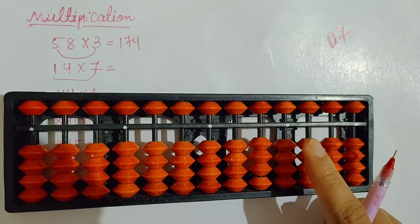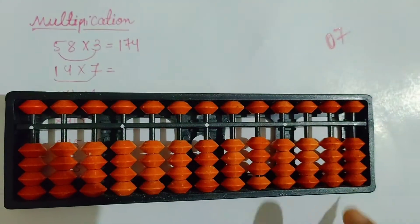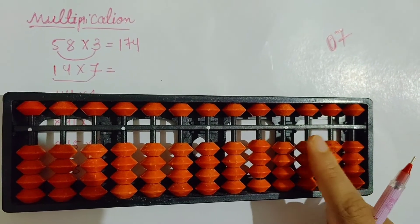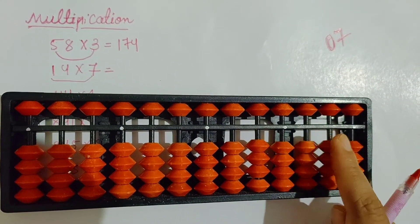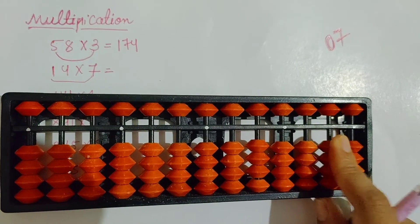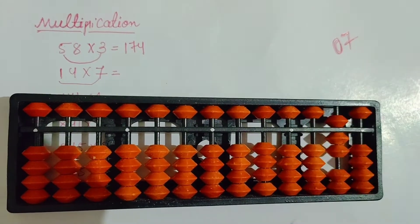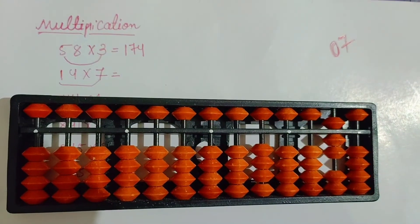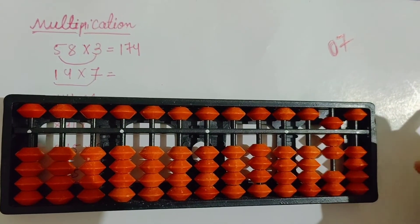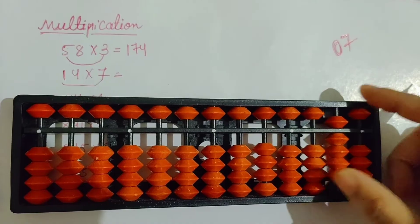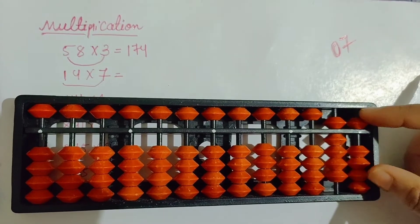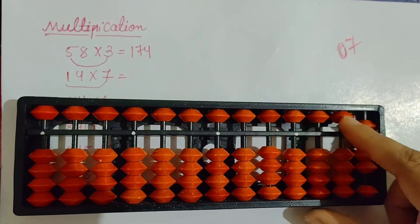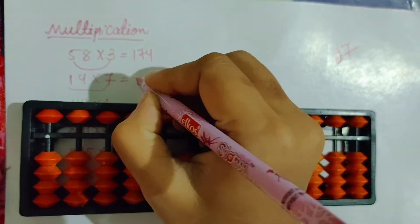Because 3 digit question is there — 1, 2, 3 — so you will start the answer from the third row. Here you will take 0 and here you will take 7. Next, 7 4s are 28. So the answer is 98. Write down here 98.